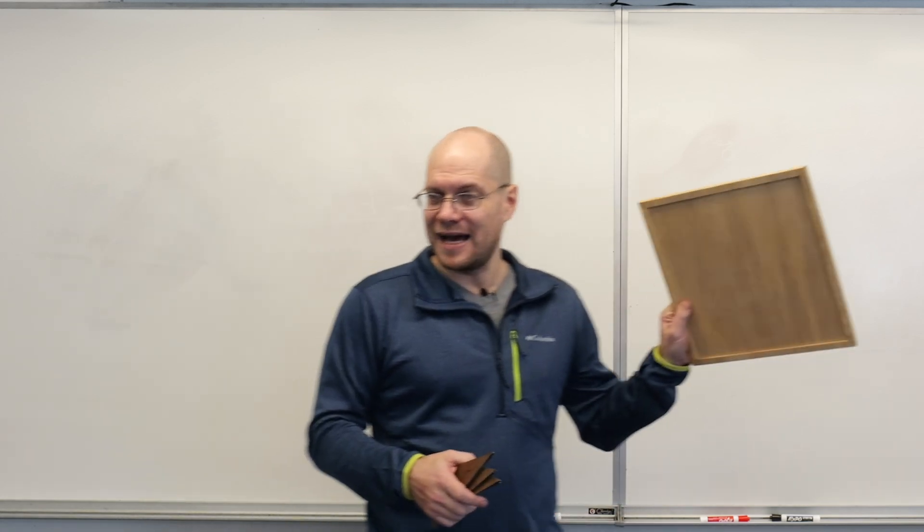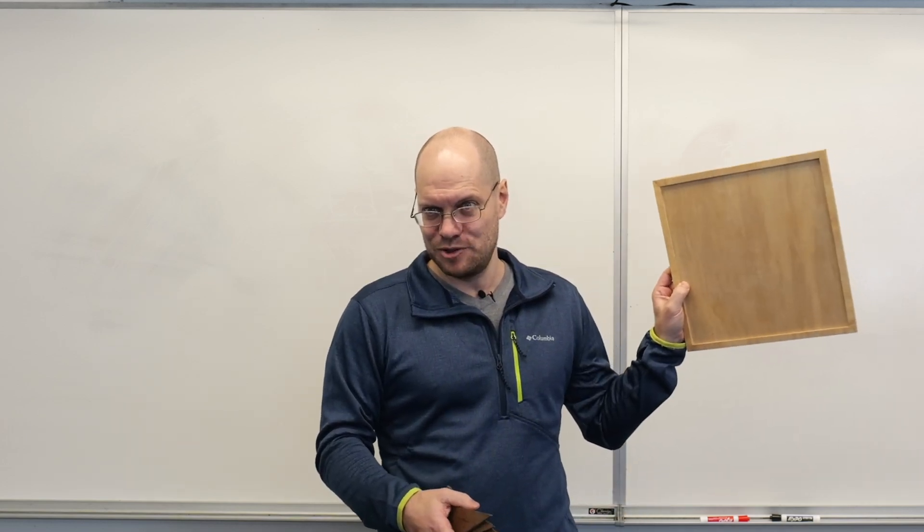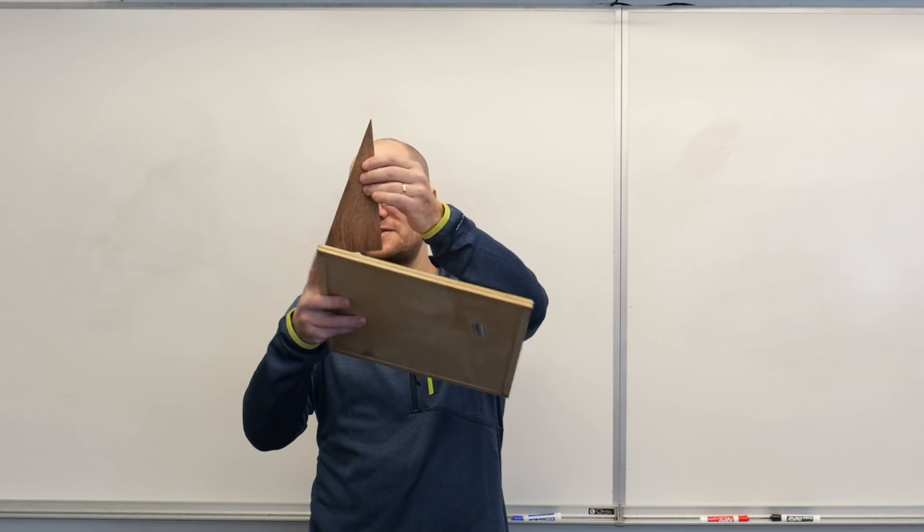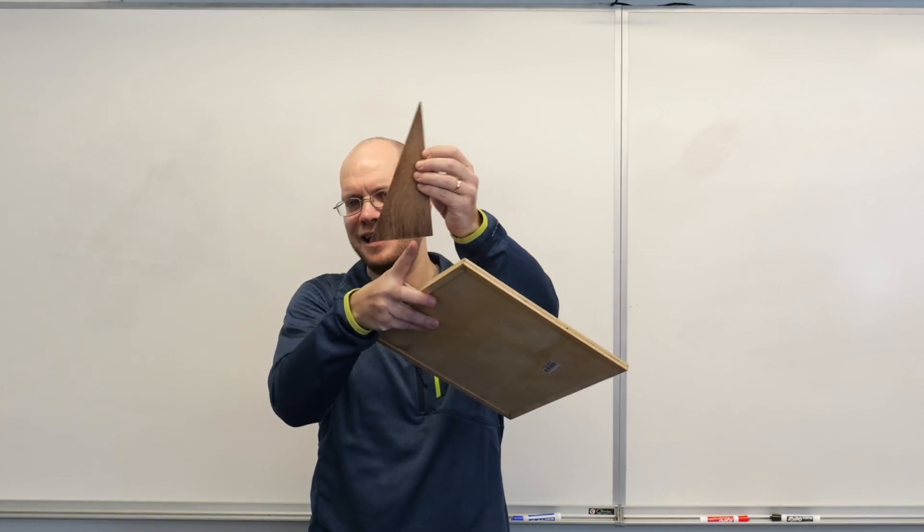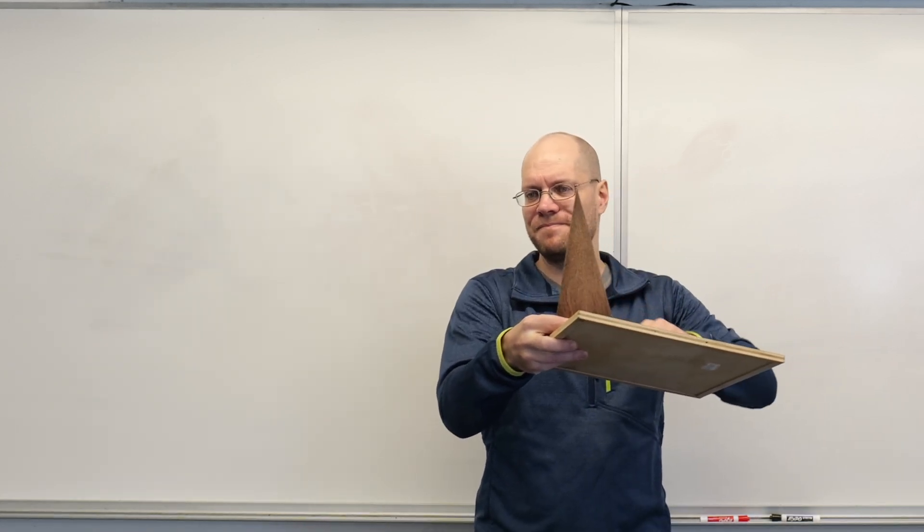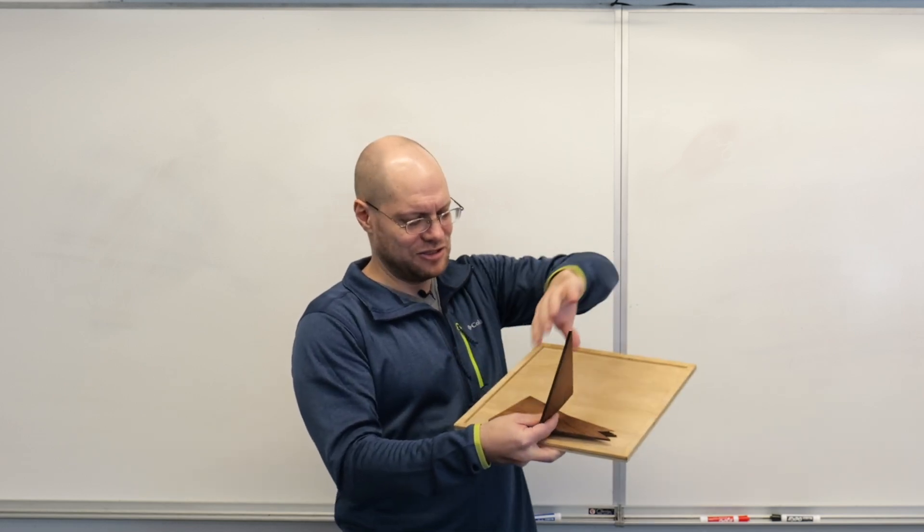We'll start with Pythagoras' theorem, and I brought this prop back because the first time I used it we were not filming, and I spent so much time doing this. So what we have here is four identical right triangles with sides A, B, and C. Let's call the shorter side A, the longer leg B, and the hypotenuse C. And we can arrange them in this square, one and the same square, in two different ways.